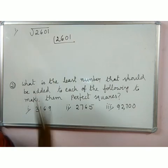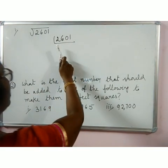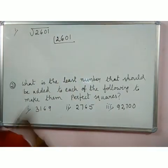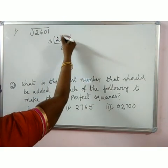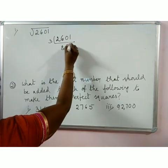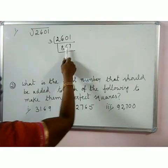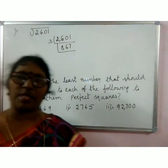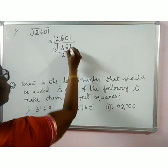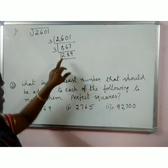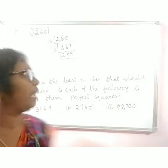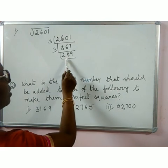The ones place is 1, so this number is not divisible by 2. Check if divisible by 3: 2+6+0+1 = 9, yes, divisible by 3. Dividing gives 867. Check 867: 8+6+7 = 21, divisible by 3 again. Dividing gives 289. Check 289: 2+8+9 = 19, not divisible by 3, not by 5, not by 7, not by 11, not by 13. Try 17.